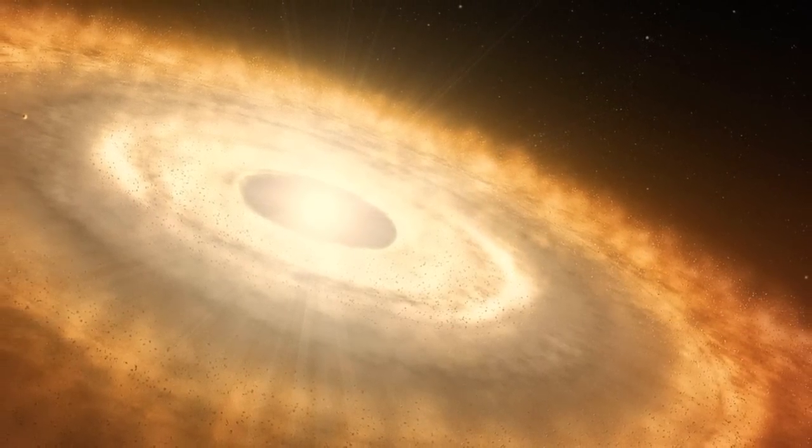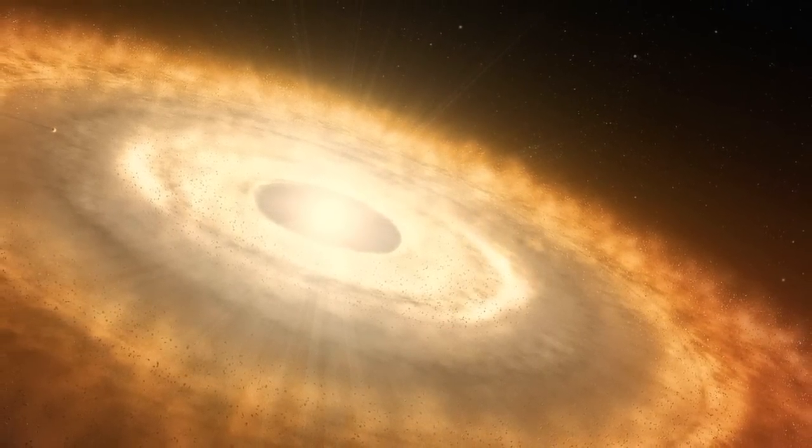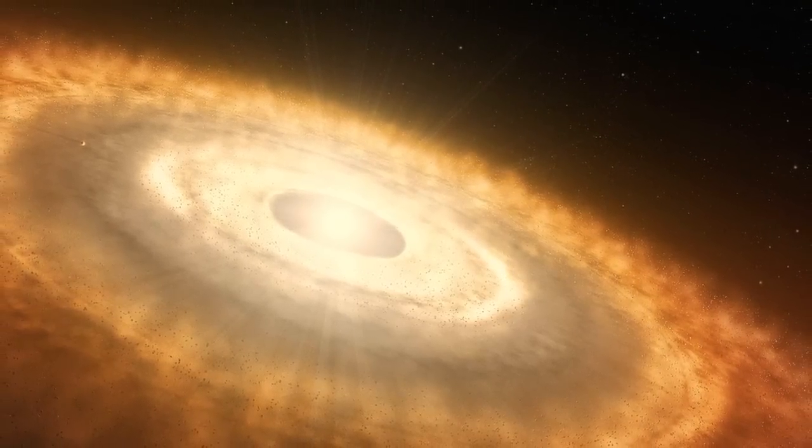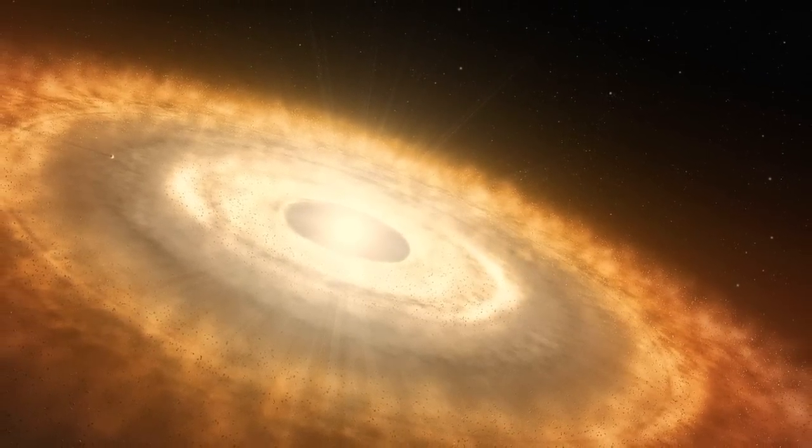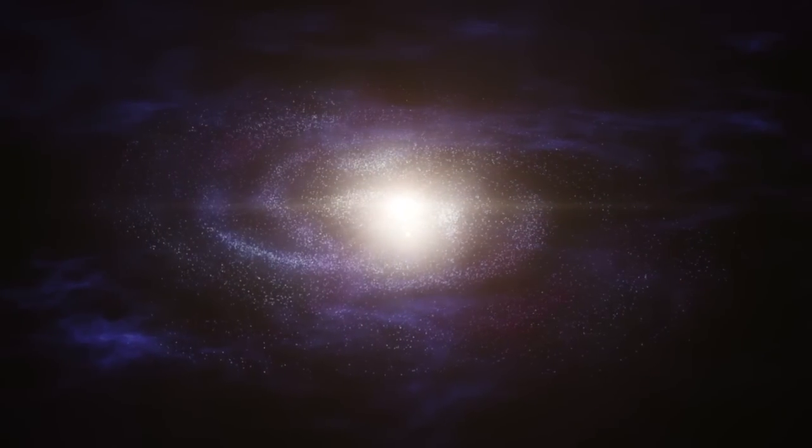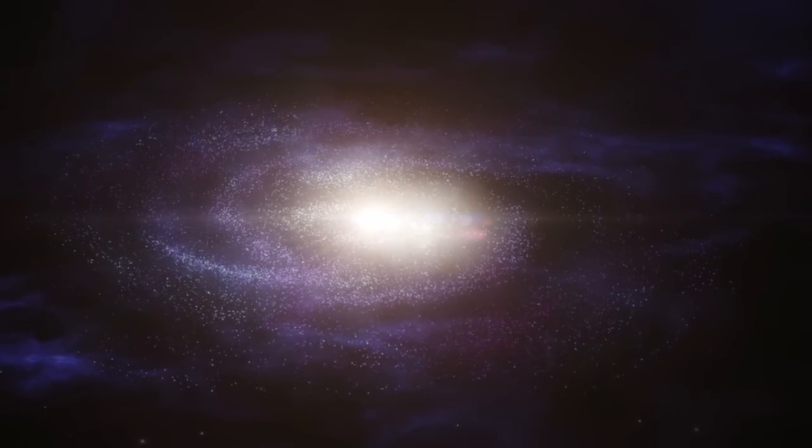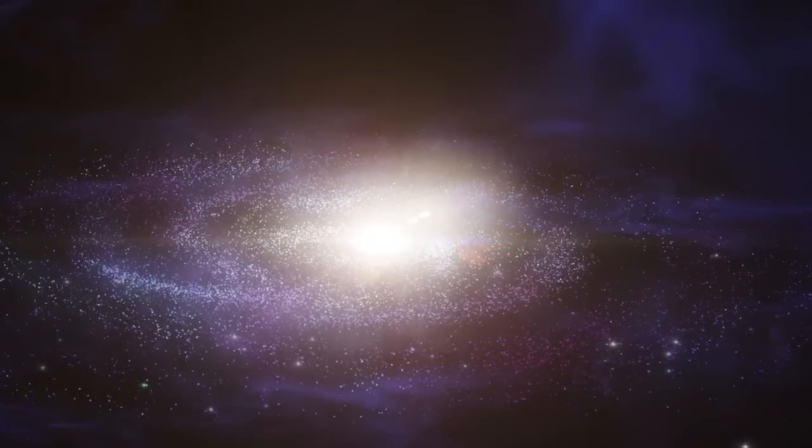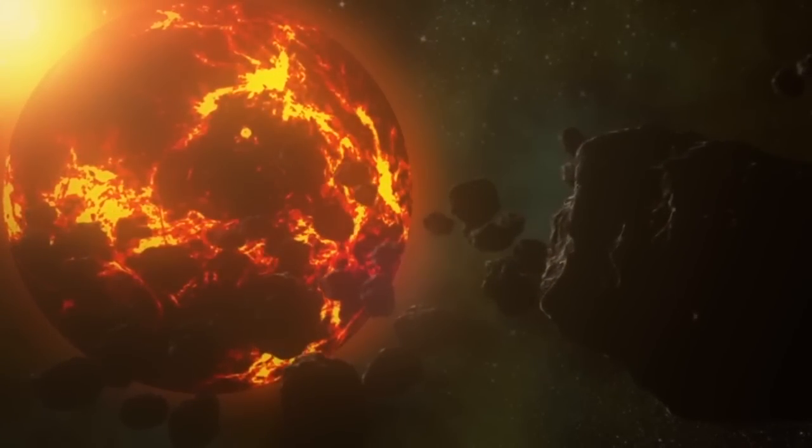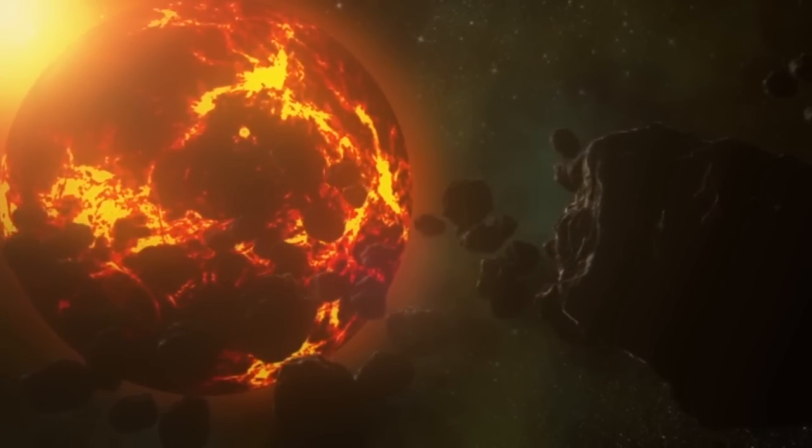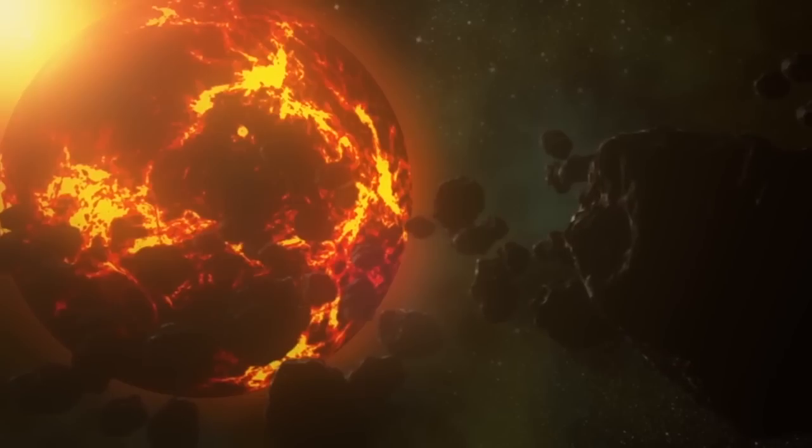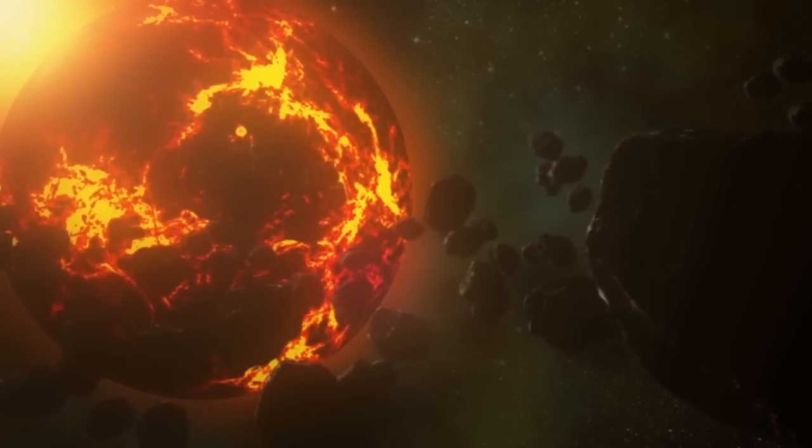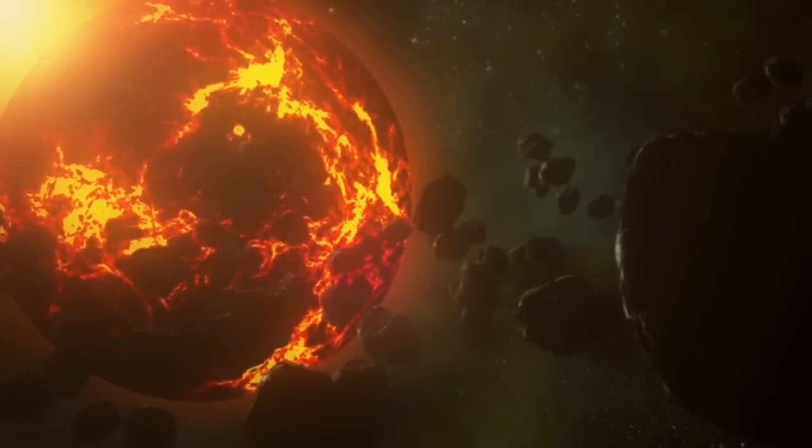8 billion years ago, an orange dwarf around 0.8 times the mass of our Sun started forming 30,000 light-years away from the 2 billion solar masses supermassive black hole at the center of its galaxy. 50 million years later, a planet 97 million kilometers away from the star, around 1.1 times the mass of Earth, began to coalesce, being just at the edge of its star's habitable zone.